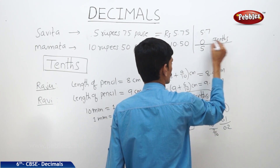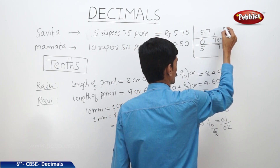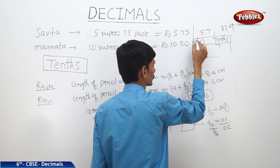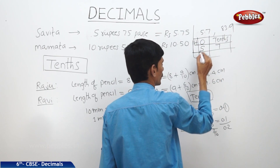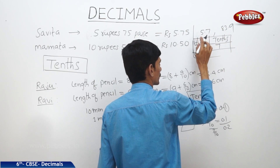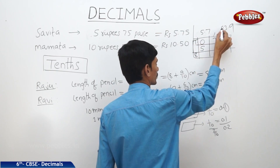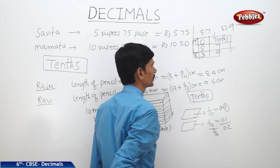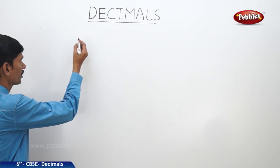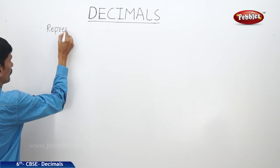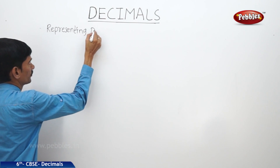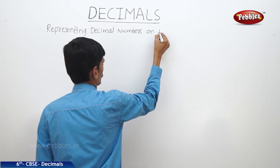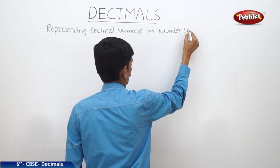If we want to write eighty-three point nine in the place value table, we have the hundreds place, ones place, and tenths place. Eight goes in the tens place, three in the ones place, and nine in the tenths place. So this represents eighty-three point nine.